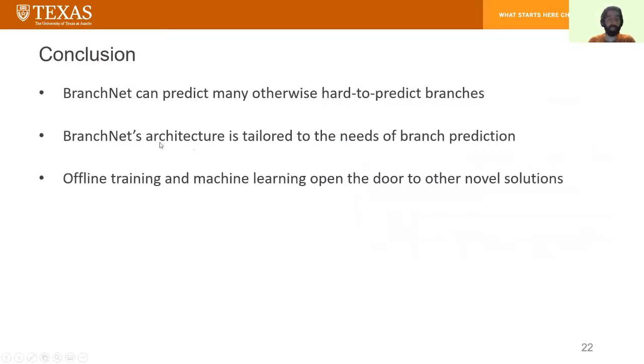In conclusion, we showed that BranchNet can predict many branches that are otherwise hard to predict for conventional predictors. We showed that BranchNet achieves this because we have tailored this architecture to the needs of branch prediction. But I also want to note that BranchNet is just a solution to the problem of noisy branches in the global history. We think that in general, the concept of using offline training for branch predictors needs to be revisited and the combination of offline training and machine learning open the door to other novel solutions.